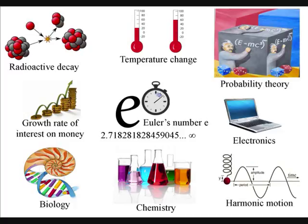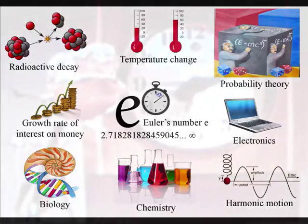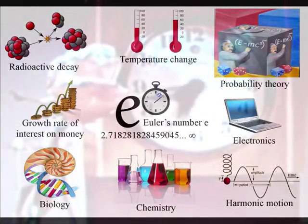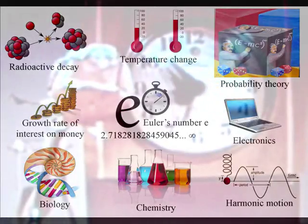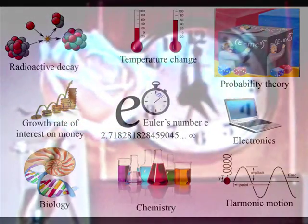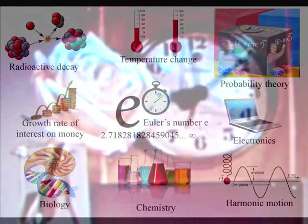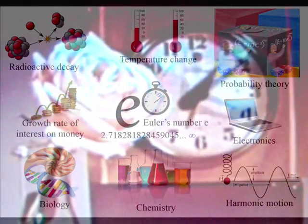These are just a few of the subjects that are connected to Euler's number E, but there is one thing that connects all the diverse subjects that the number E is connected to, and that is, they are all processes over a period of time. And I believe this is the key to understanding why the number E is everywhere in nature and physics.